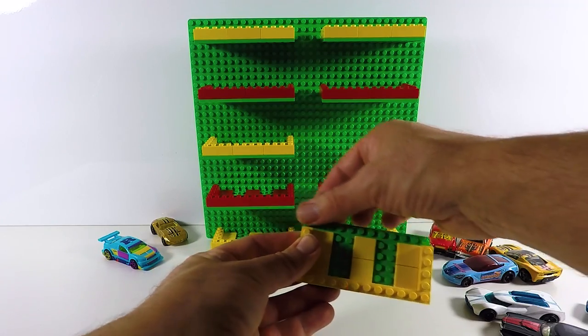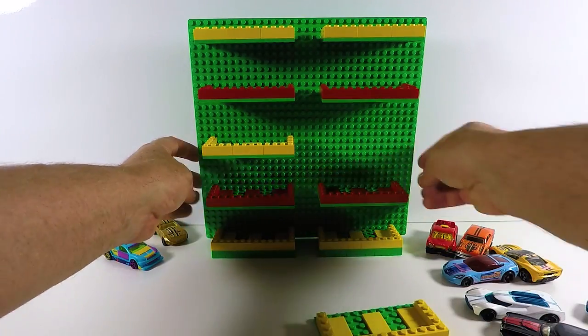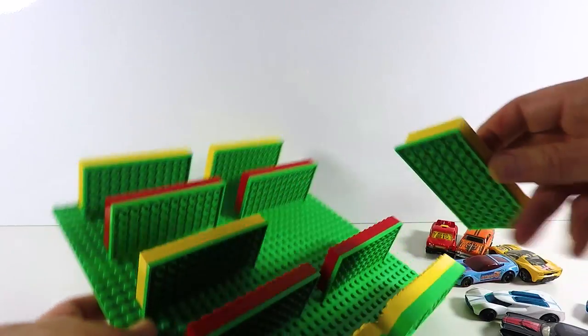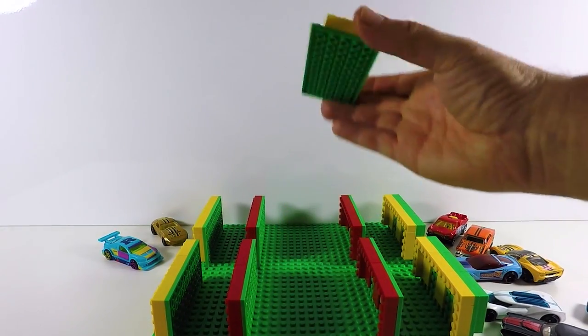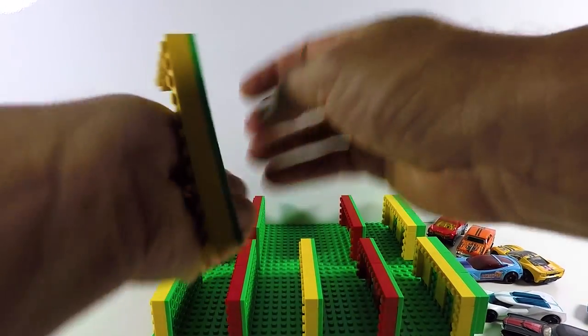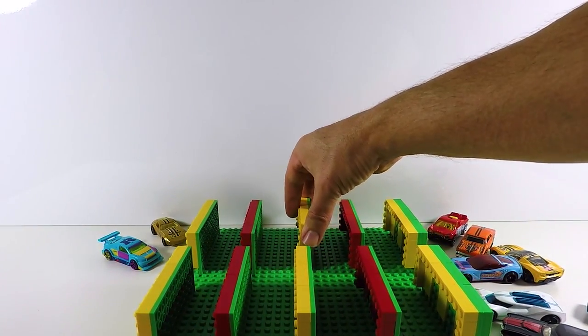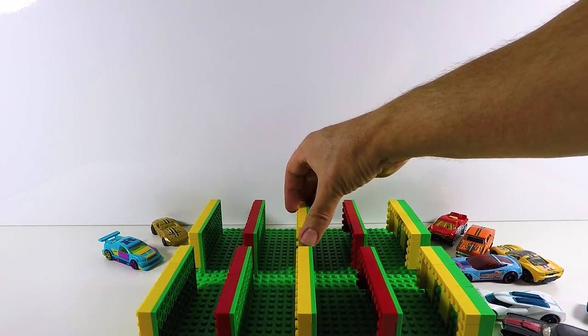So that's all you need and we just need to keep one row clear so that we can slide it into the plate. So the way that happens is they're just sliding in and it's just friction that keeps them in place. So that's as simple as it is to make your Lego Hot Wheels stand.